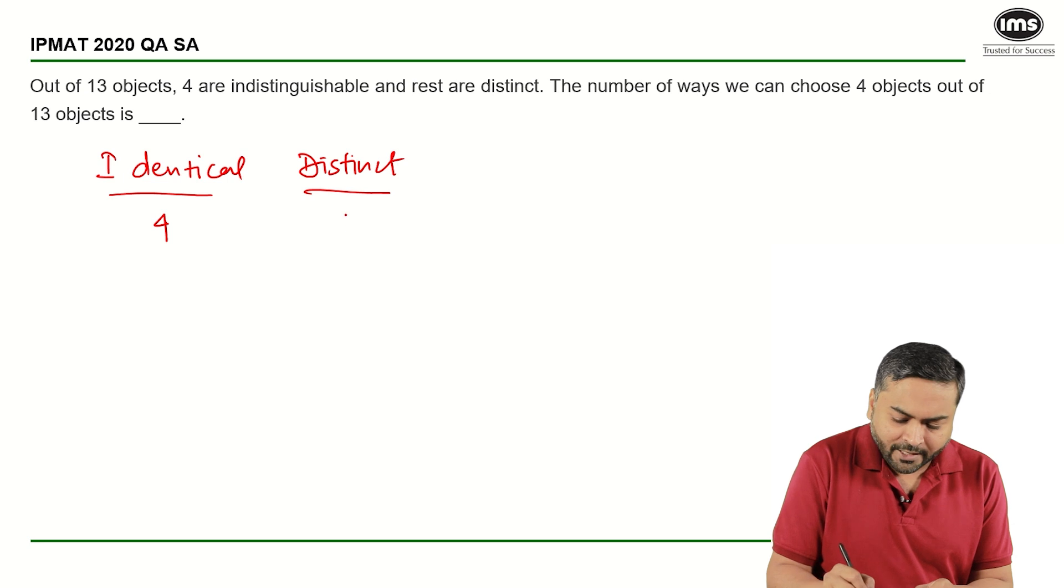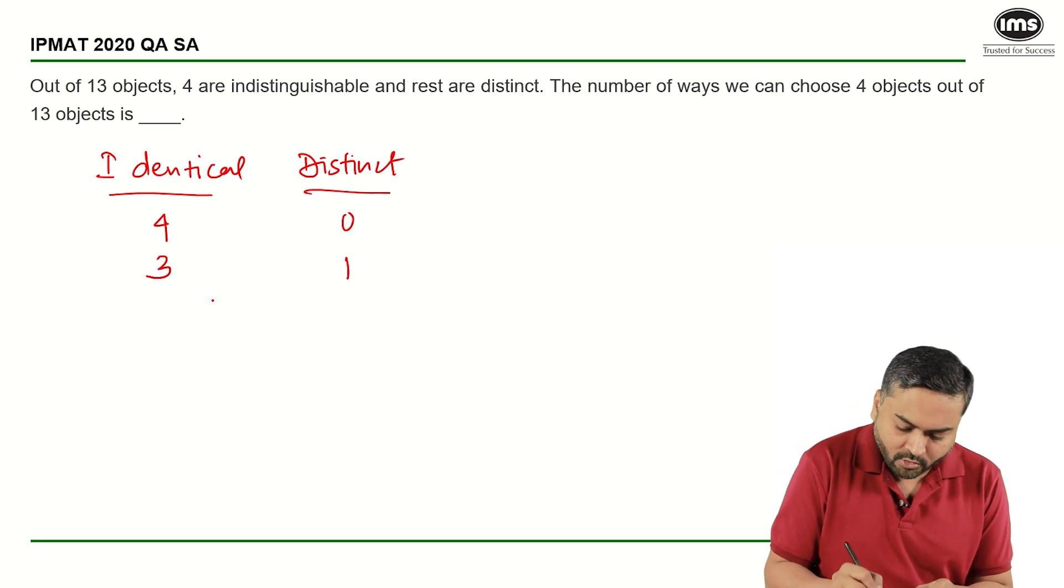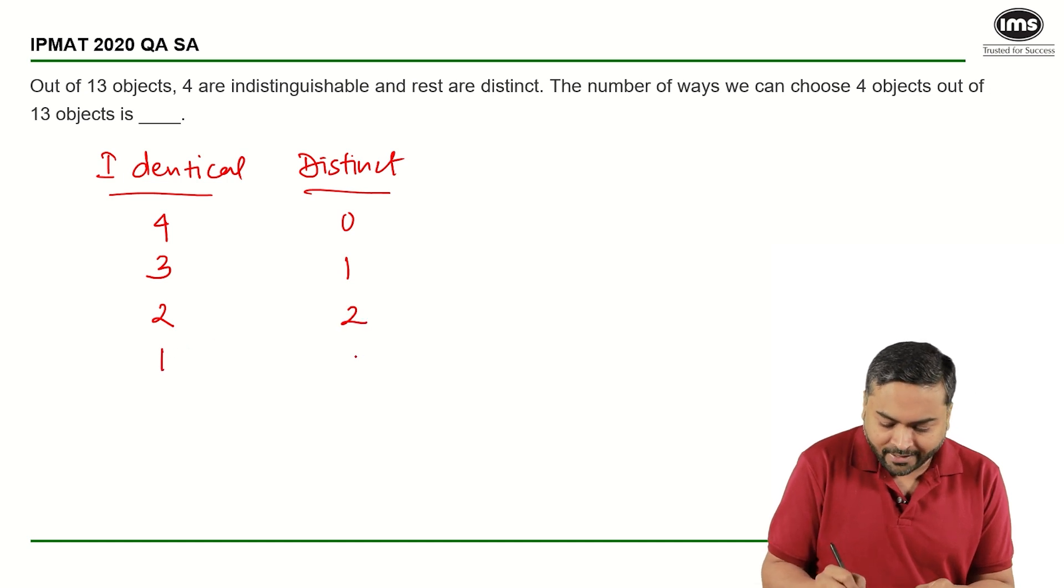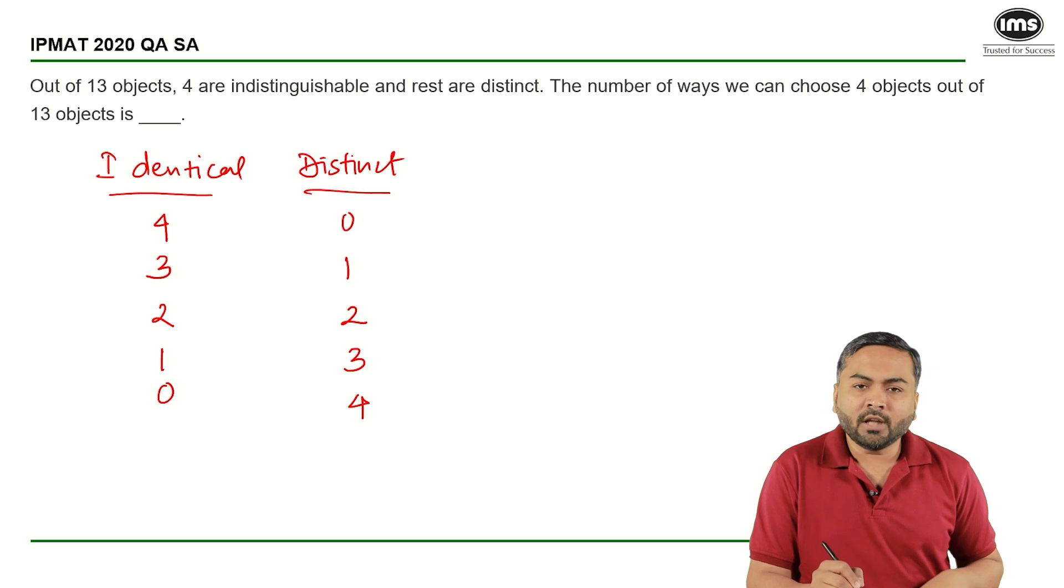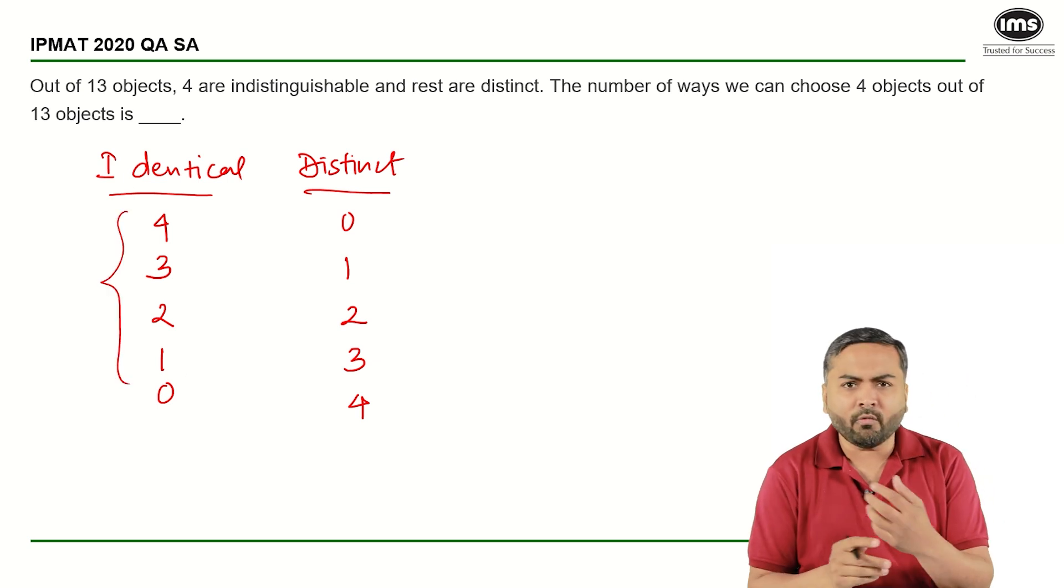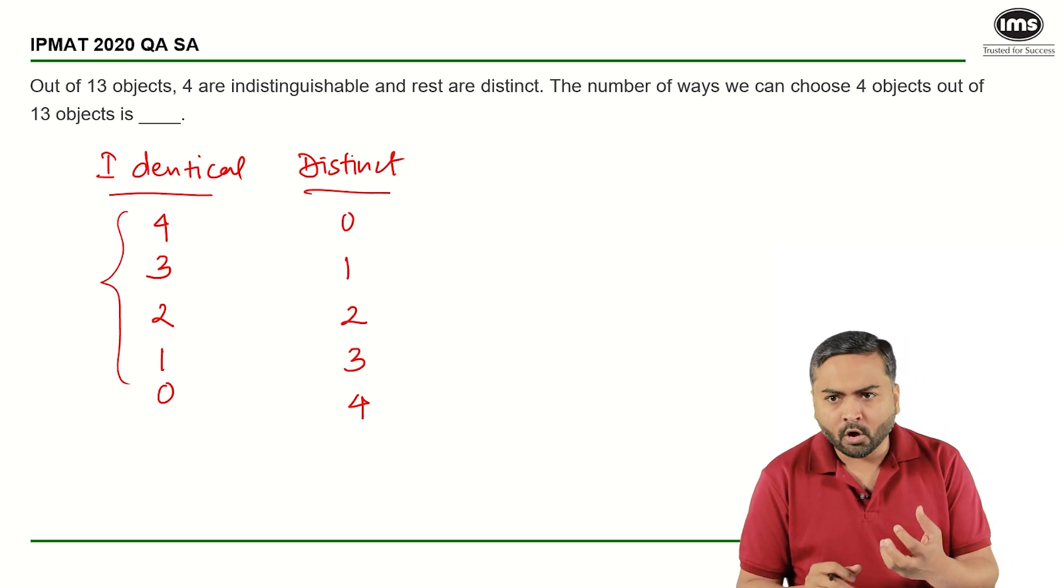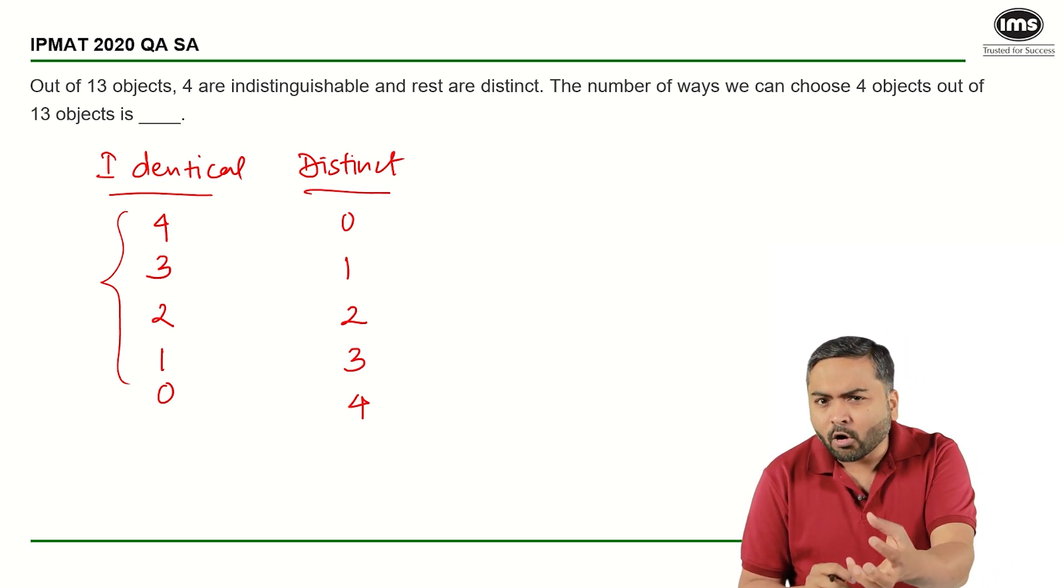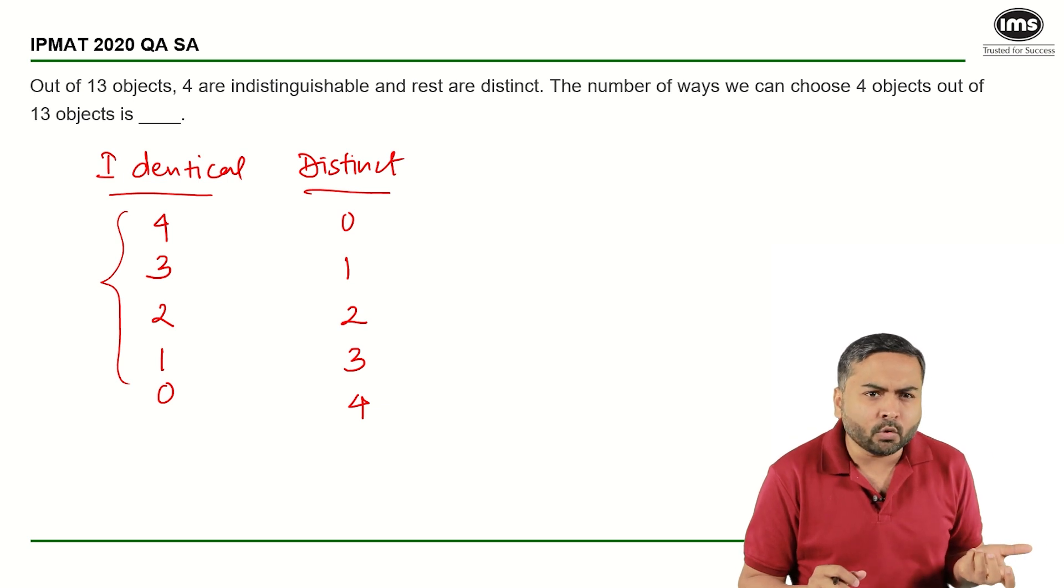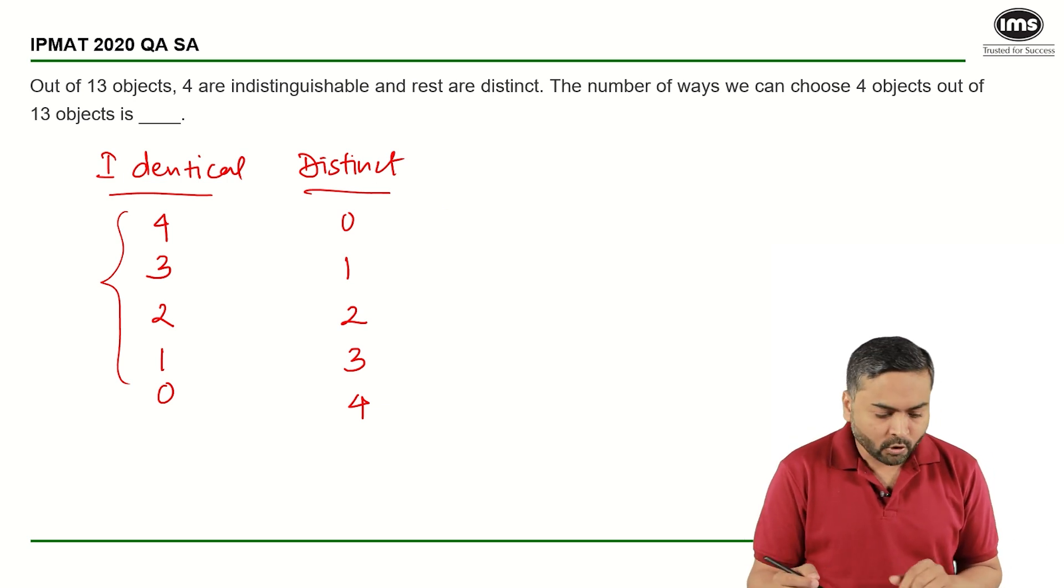So if I select all 4 identical, I cannot select any distinct. If I select 3 from here, I will select 1 from here. I will select 2 from here, I will select 2 from here. 1 and 3, and I have 0 and 4. Now since these objects are identical, there is no way - that is, you do not need any way to select them. If you know that there are 4 identical objects, in how many ways you can select 2? That is only one way, right? But for distinct objects...